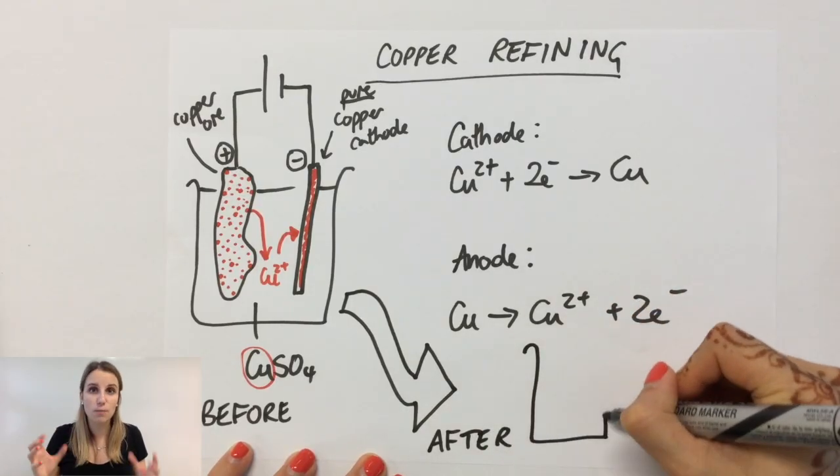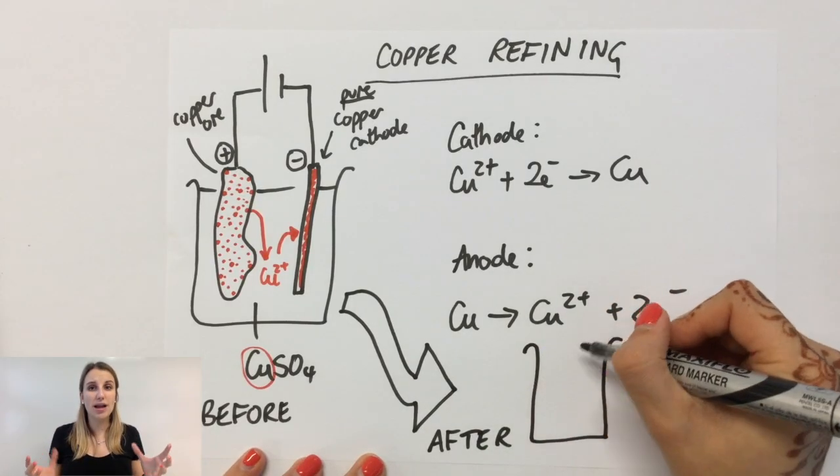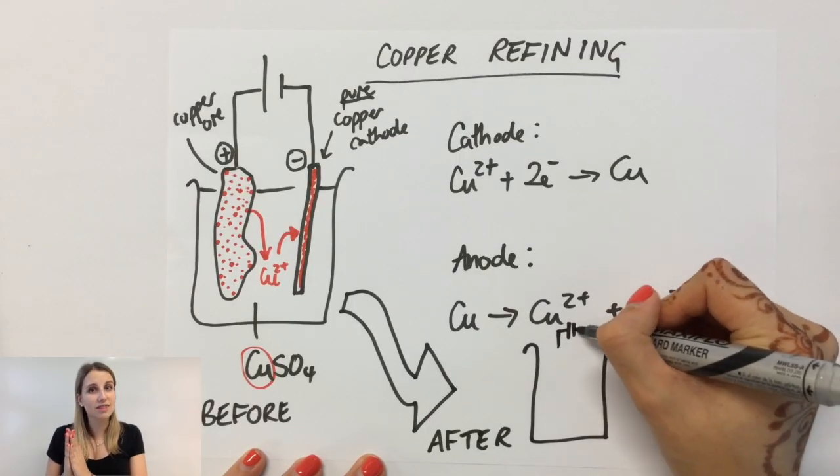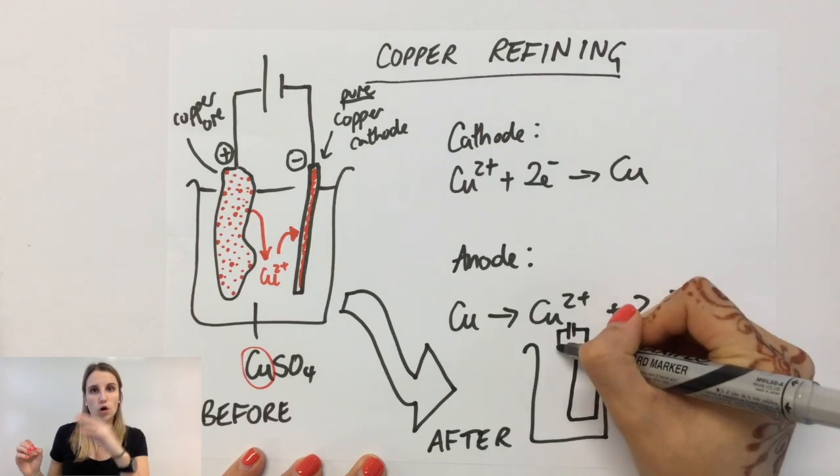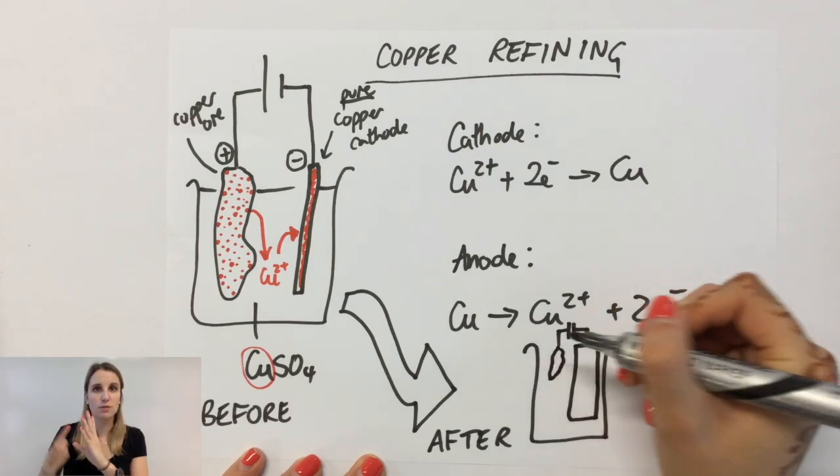Now, over a period of time, what happens is you end up with your copper cathode getting bigger and bigger as more and more copper gets coated around it.